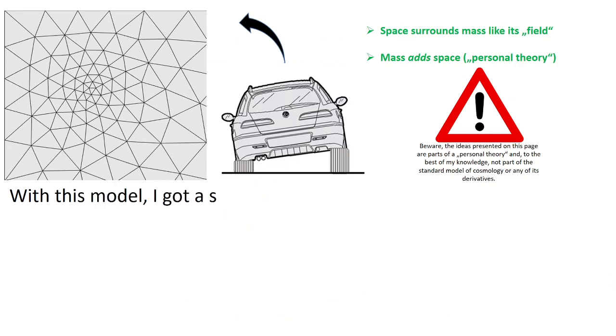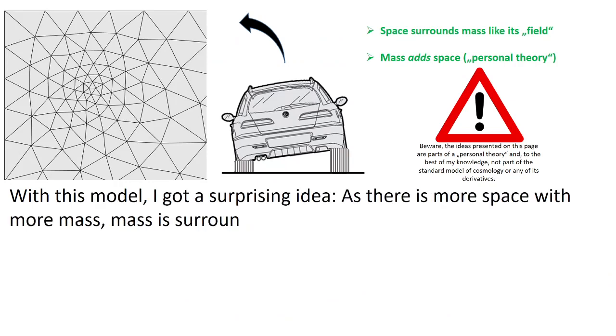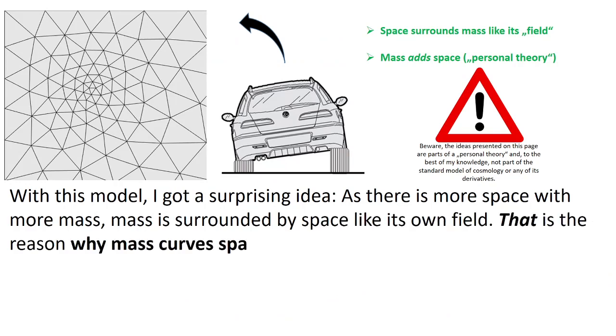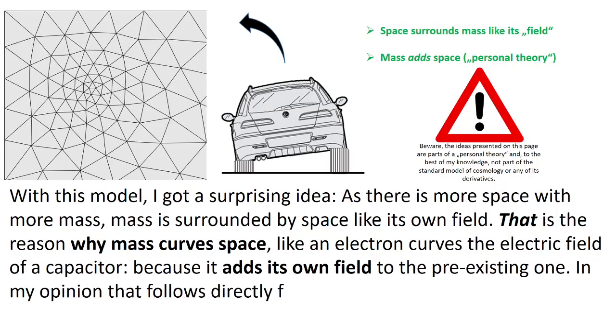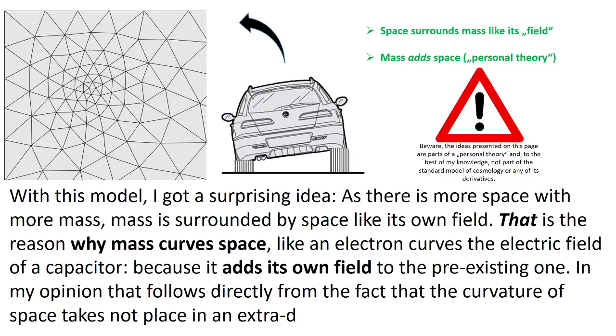With this model I got a surprising idea. As there is more space with more mass, mass is surrounded by space like its own field. That is the reason why mass curves space like an electron curves the electric field of a capacitor. Because it adds its own field to the pre-existing one. In my opinion that follows directly from the fact that the curvature of space takes not place in an extra dimension.